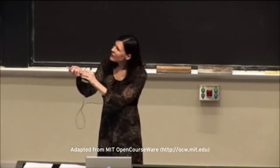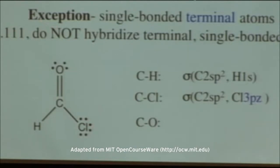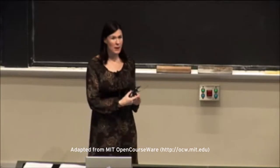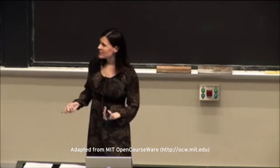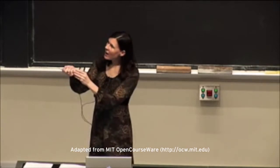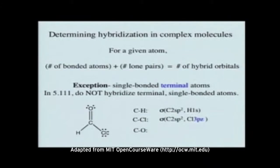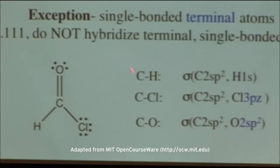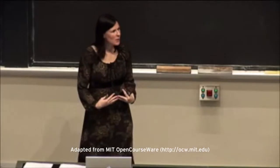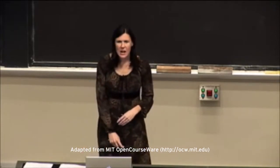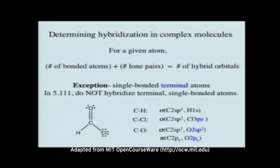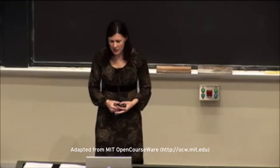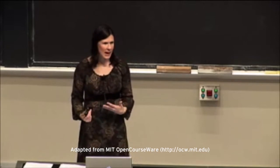Now let's look at the carbon-oxygen double bond. Any double bond is made up of one sigma bond plus one pi bond. For the sigma bond, carbon is 2sp2, and the oxygen is also 2sp2 — because oxygen is bonded to one atom plus two lone pairs, giving three hybrid orbitals total. So the sigma bond is carbon 2sp2 with oxygen 2sp2. For the pi bond, that's carbon 2py with oxygen 2py — or alternatively carbon 2px with oxygen 2px, either is correct.